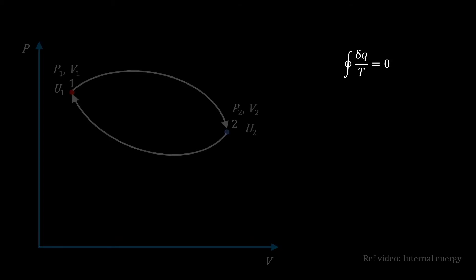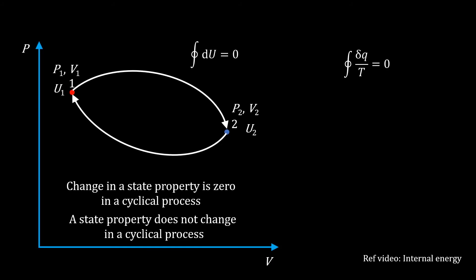Let's recall what we have seen about internal energy, another state property. The cyclic integral of internal energy is zero. Change in a state property is zero in a cyclical process. Or in other words, a state property does not change in a cyclic process.